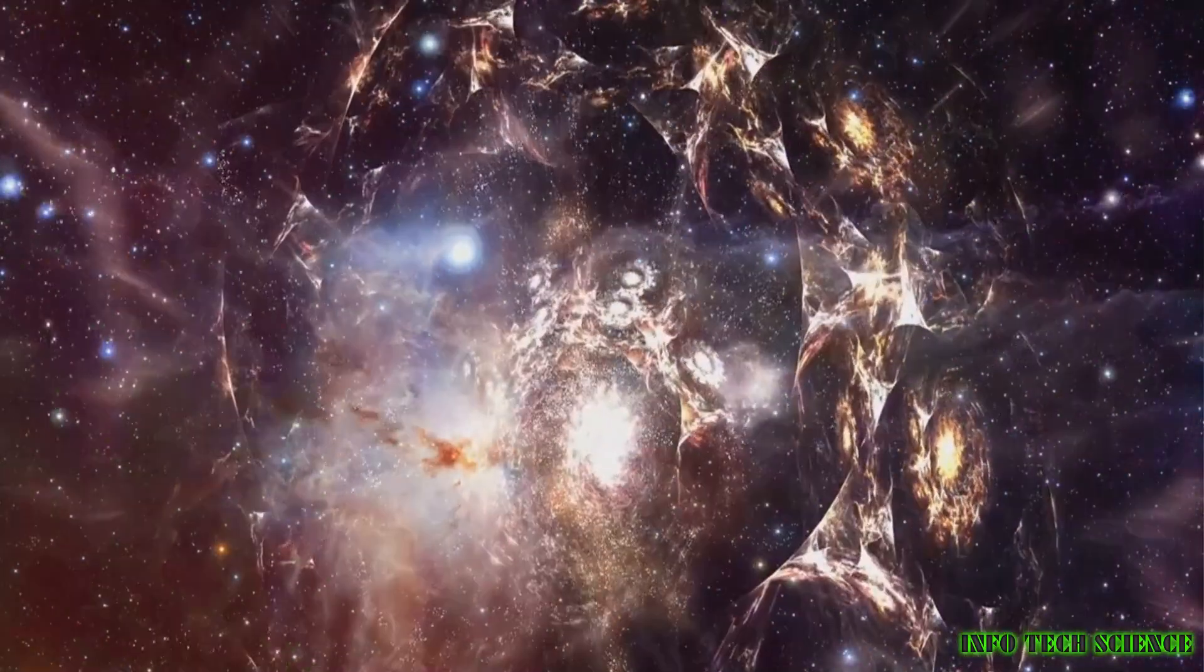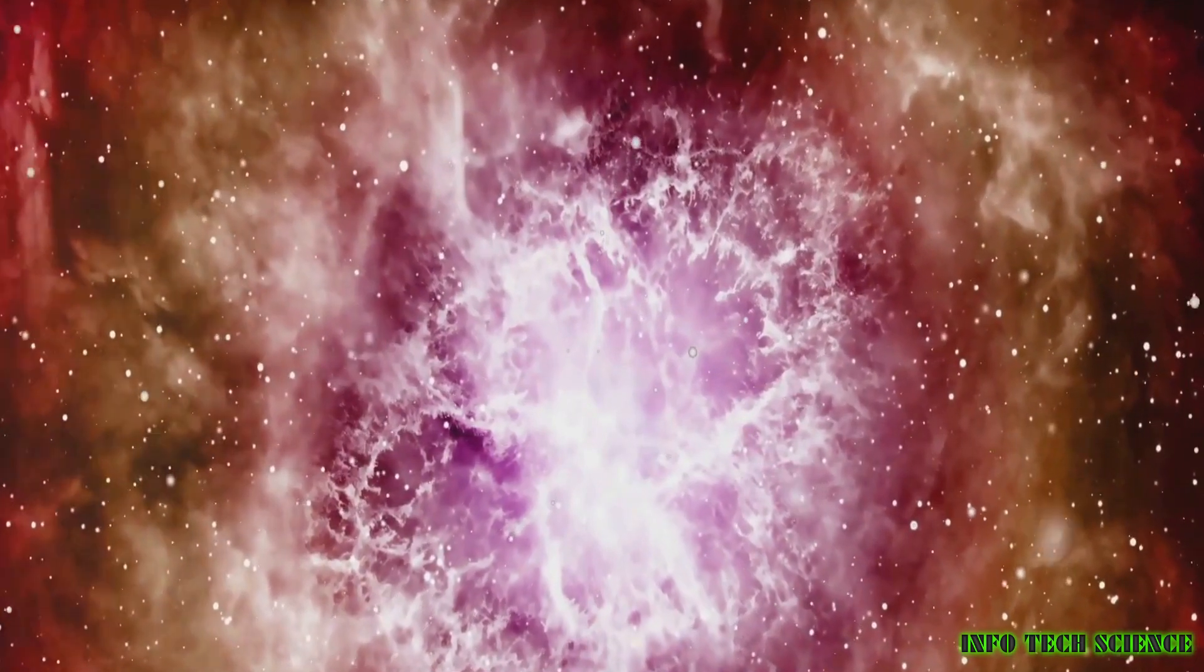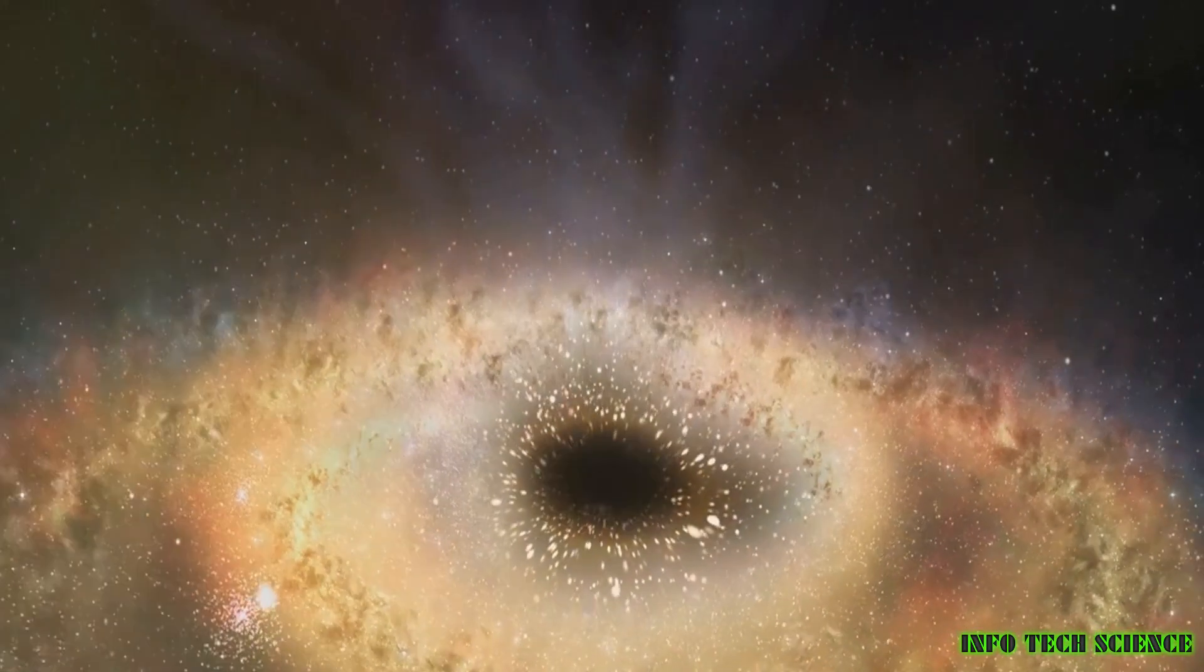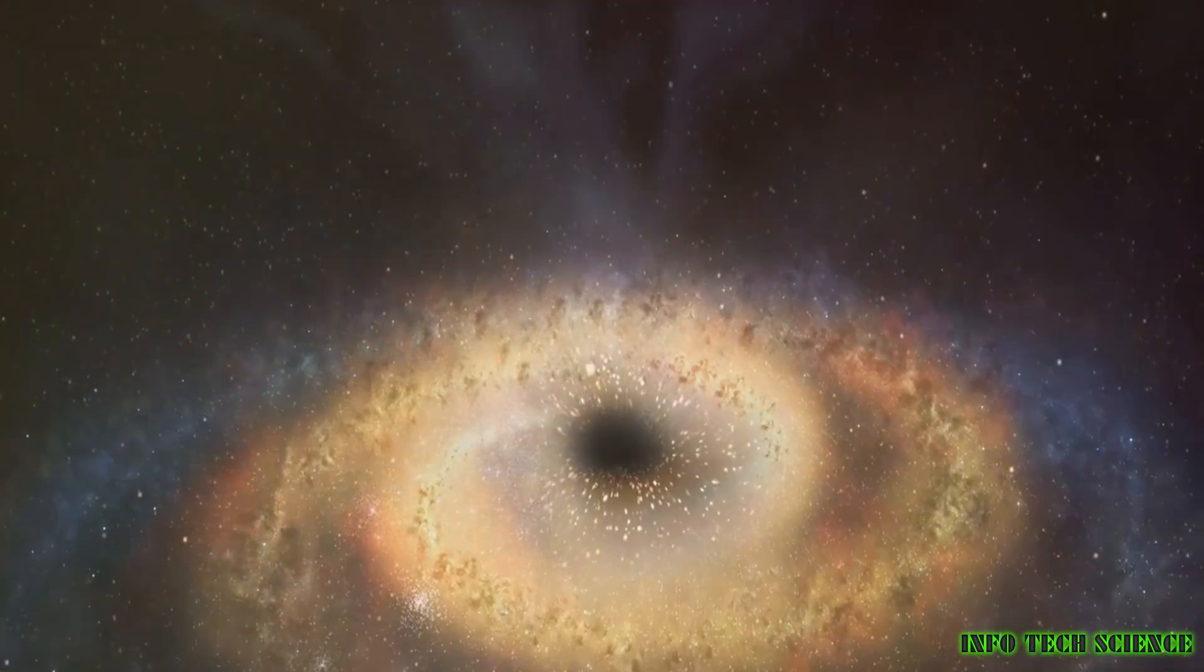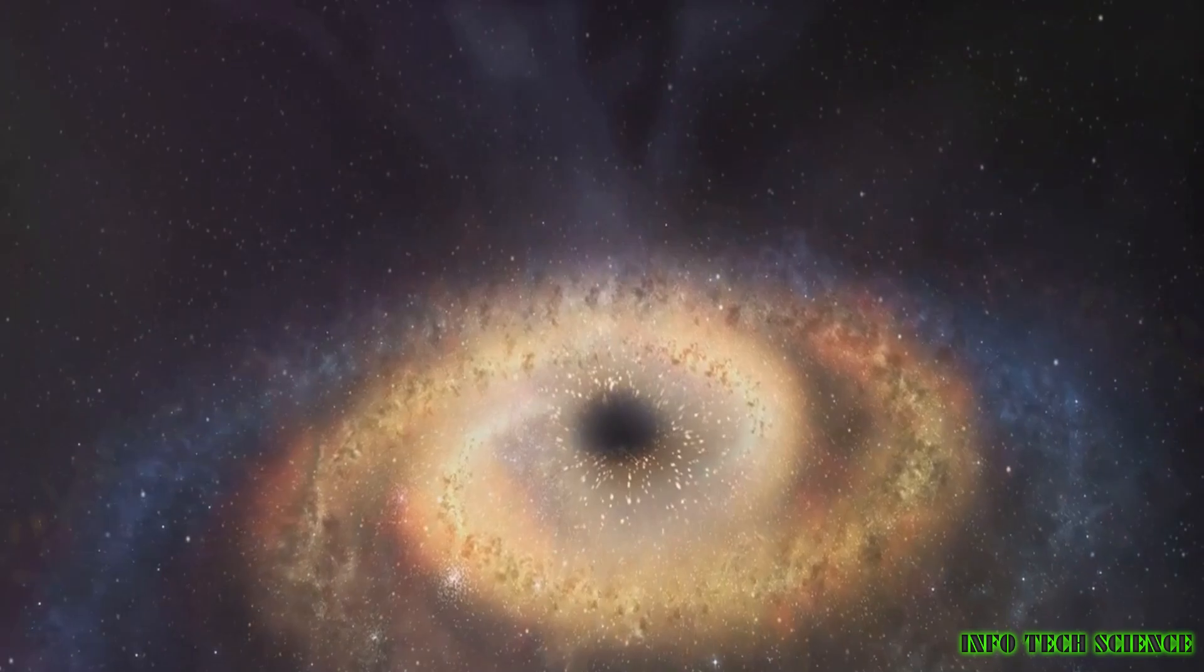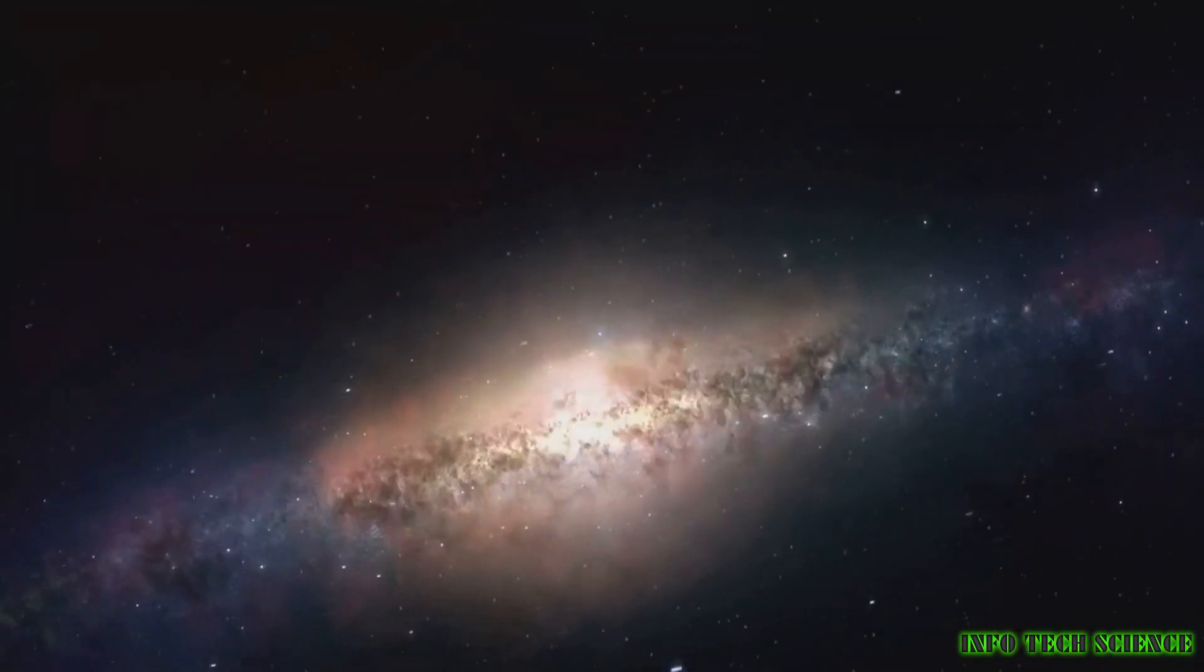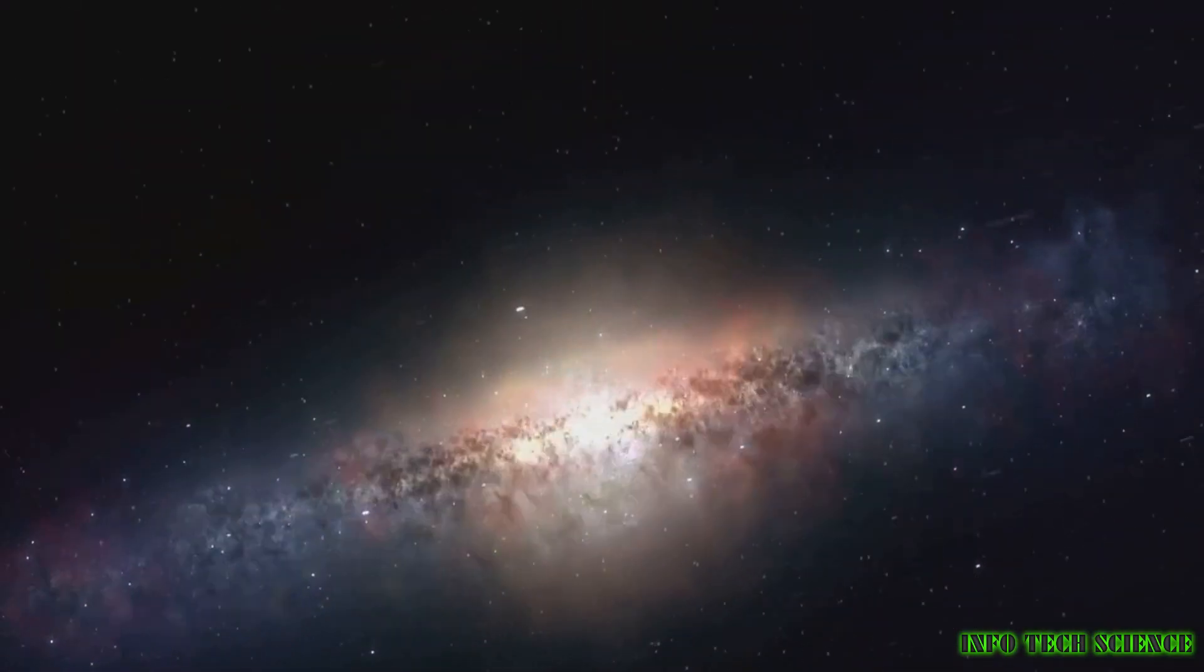Star formation ceases when environmental factors starve a galaxy of the gas needed to seed the birth of new stars. Supermassive black holes or the violent interactions of stars can be the culprits that eject gas from galaxies, bringing star formation to a quick halt. Or, the act of star birth can consume so much gas that there isn't time for enough to be replenished to ensure the process will continue in the future.